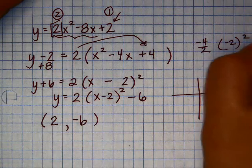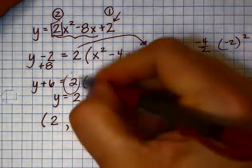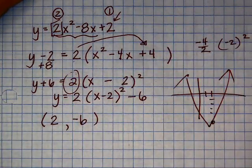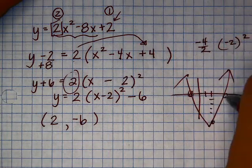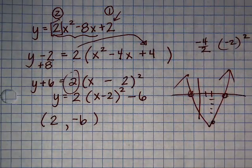So a quick sketch would be over two, down six, positive. We've got this going on here, which means there are two real roots.